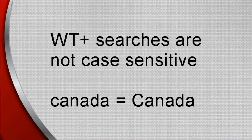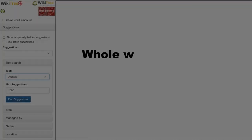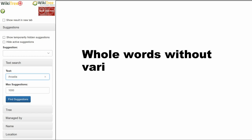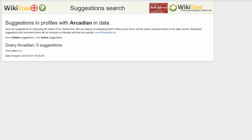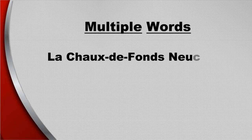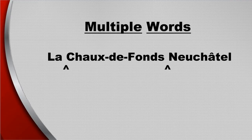All searches on WikiTree Plus are not case sensitive. This searches for whole words without variations — results are different for 'Acadia' and 'Acadian.' In any search, you can enter multiple words and only those items are displayed where all the words are found. Spaces represent AND.